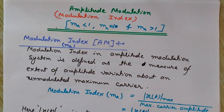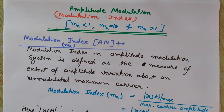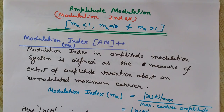Hi, welcome to Engineering Made Easy. This is Lalith Vasist. Today we will discuss the modulation index in an amplitude modulated system. We will see what happens when the modulation index in amplitude modulation is less than 1, equals to 1, or when it is greater than 1.